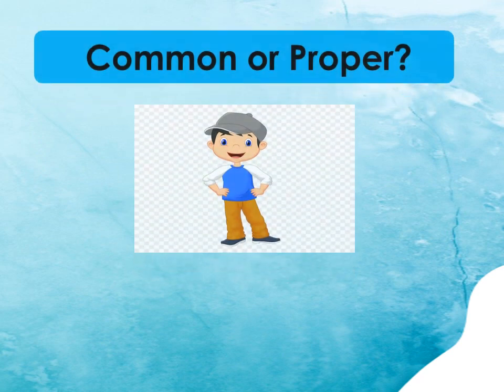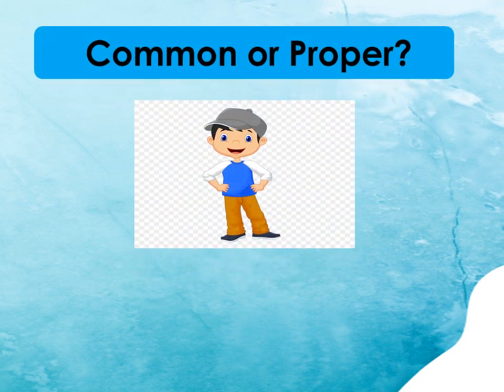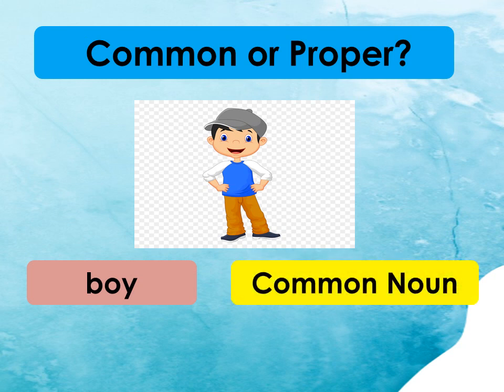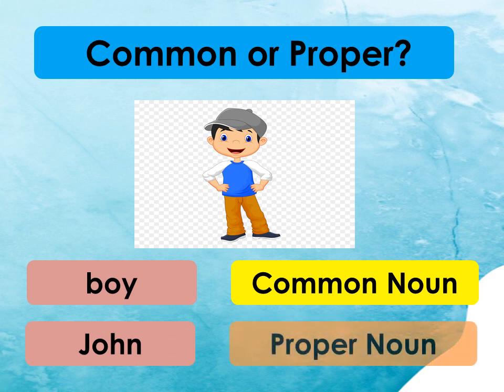Now, let us try this activity. Tell me if it is a common or a proper noun. Boy — that's correct, it's a common noun. Boy is a general name of a person and it starts with a small letter. John — that's correct, it's a proper noun. John is a specific name of a person and it starts with a big letter.